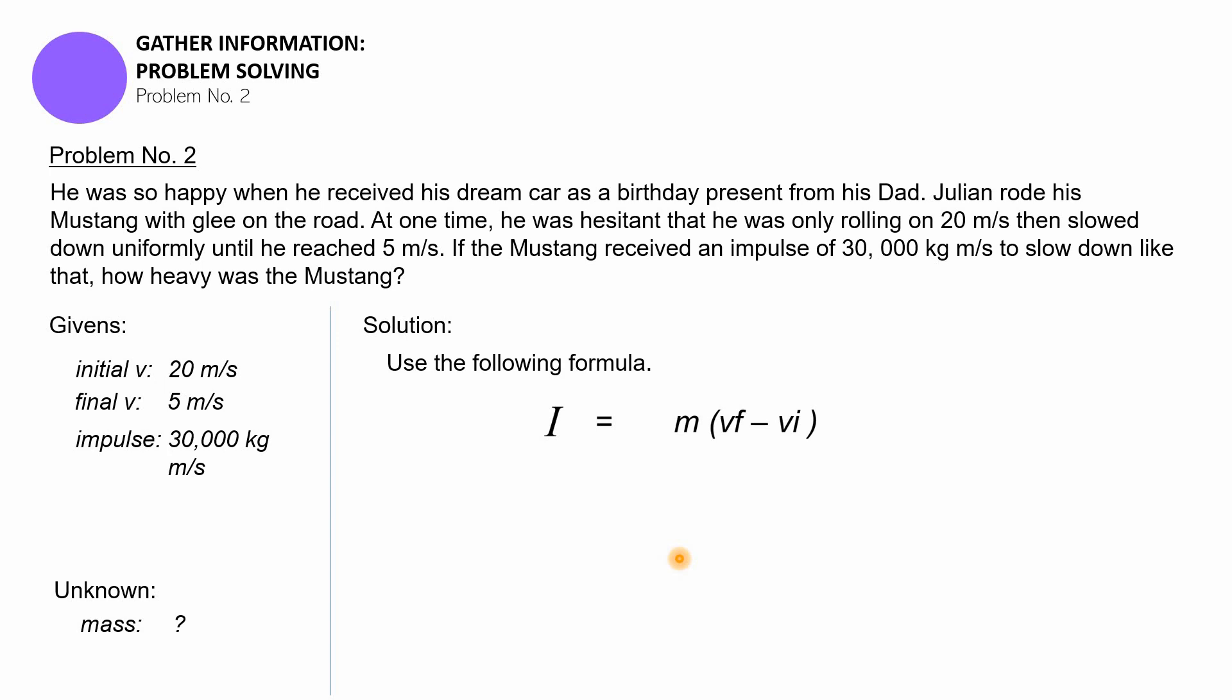Again, impulse is equal to mass multiplied by final velocity minus initial velocity. There's no need to use the other formula where impulse equals pf minus pi. We can use this version of our formula. The impulse was given - we can put it as 30,000 kilograms meters per second.